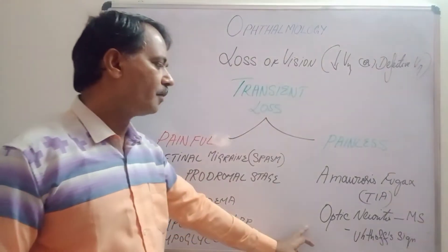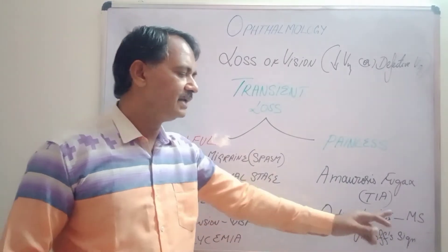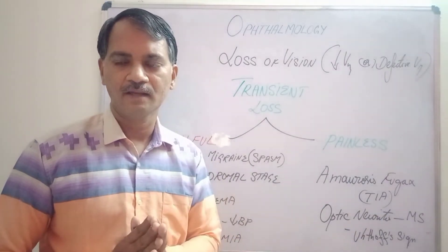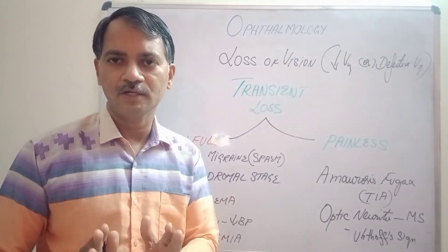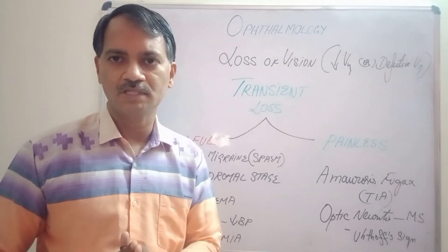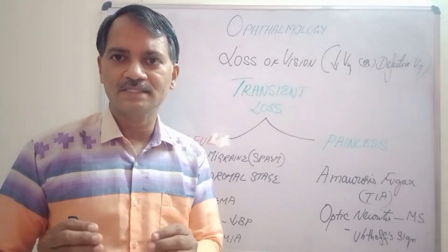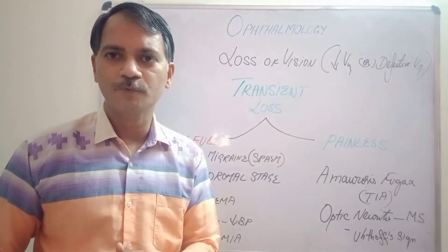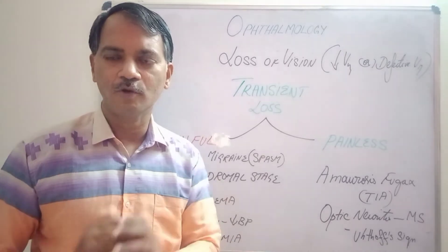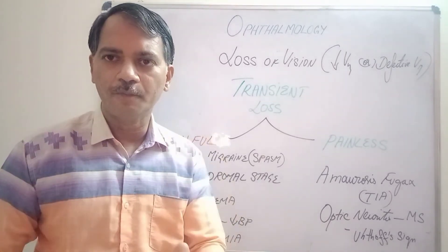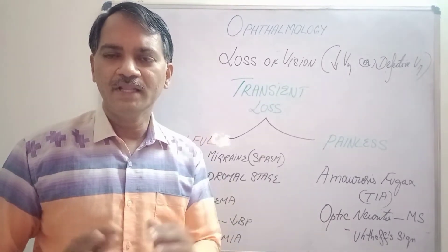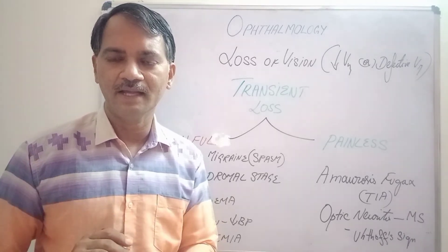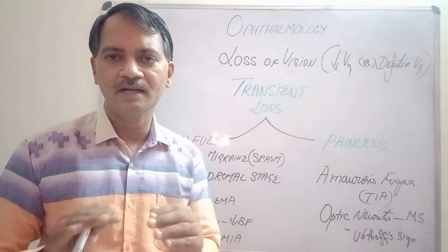Next is optic neuritis caused by demyelinating diseases like multiple sclerosis. When a patient has optic neuritis with multiple sclerosis and does sudden exertion, too much active work, or is exposed to high heat, there will be a sudden drop in vision. When the patient takes rest or moves away from the exertion, the vision returns back to normal.